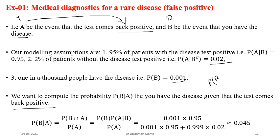Let A be the event the test comes positive and B be the event that you have the disease. The desired quantity is P(B|A) — the probability of having the disease given the test is positive. Similarly, if the test came back negative (A complement), we want P(B | A complement) — the probability of having the disease given a negative test result.